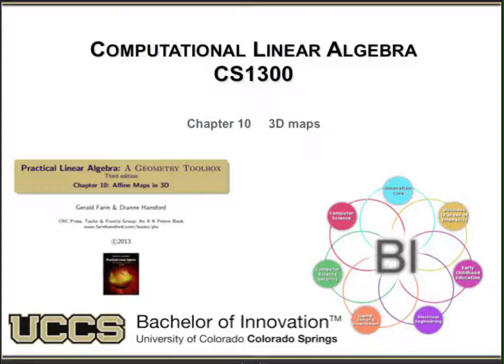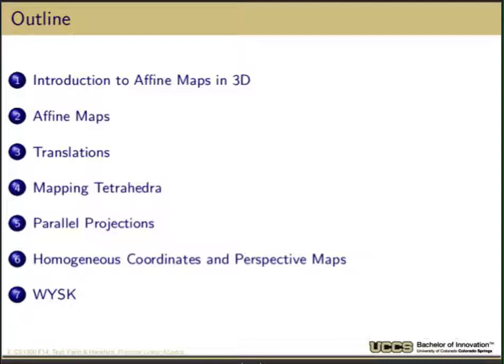We'll be looking at 3D maps, homogeneous coordinates, and projections. Looking at 3D affine maps, we'll quickly introduce those and look at how we do translations in 3D, talk about how to compute affine maps as 3D to 3D mappings, and then we'll talk about the very important types of projections from 3D down to 2D. We'll look at parallel projections, then introduce the very important concept of homogeneous coordinates and perspective maps.